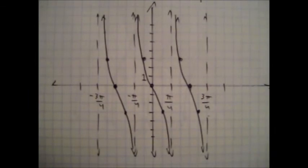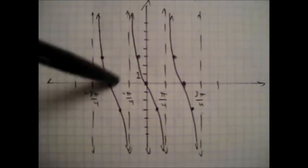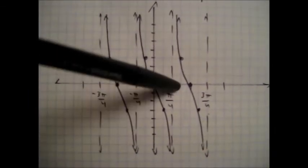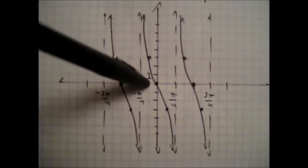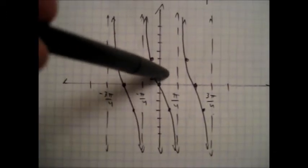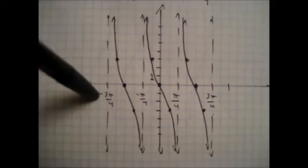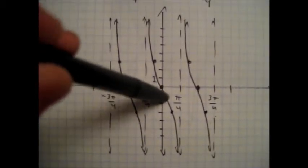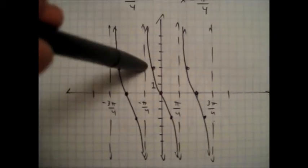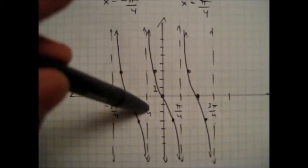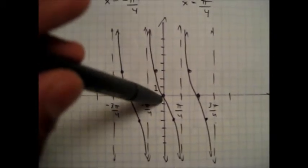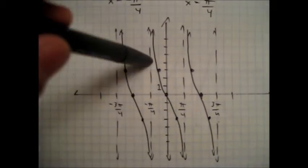We'll put the asymptotes down and find the halfway point in between them to get the zeros. But this time, instead of finding the halfway point between the zero and the asymptote to graph the one, we'll find the halfway point and graph down three because of this negative three. And on this side, we'll go up three, because you take the opposite of negative three, which is three.